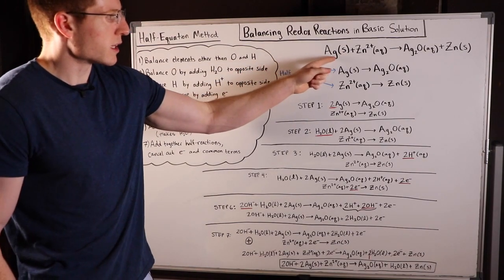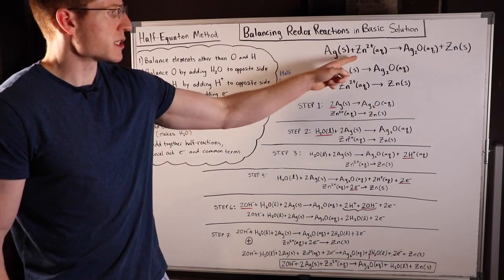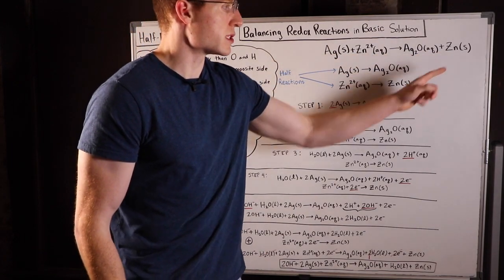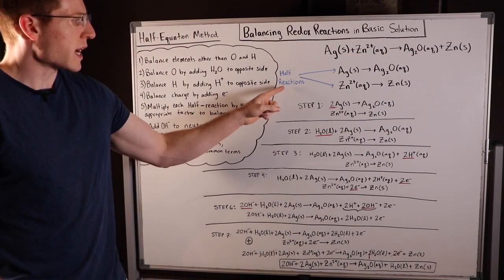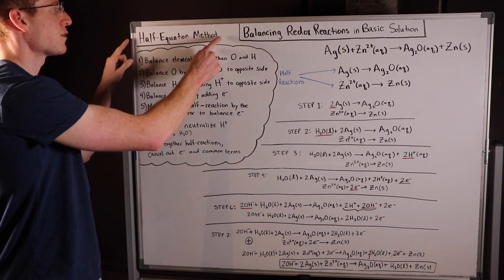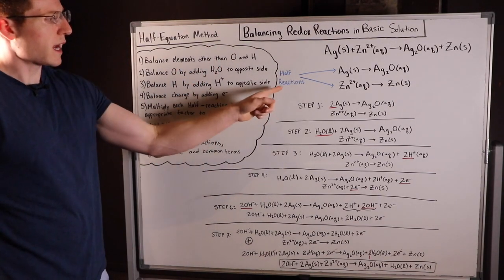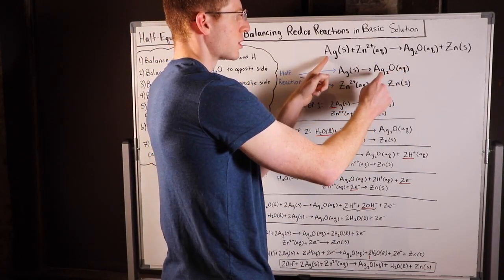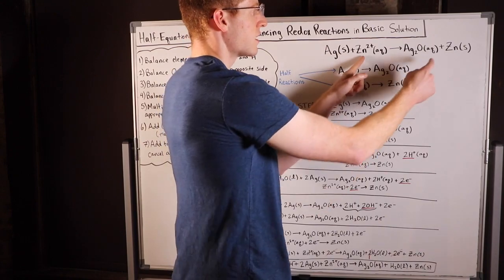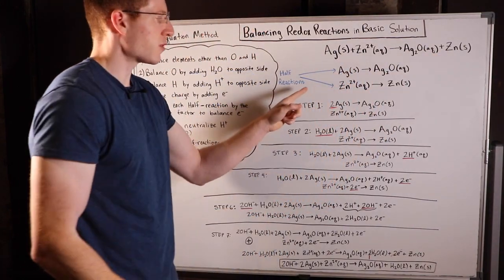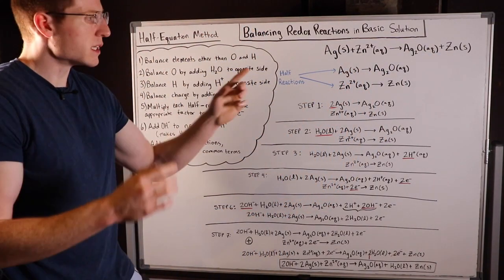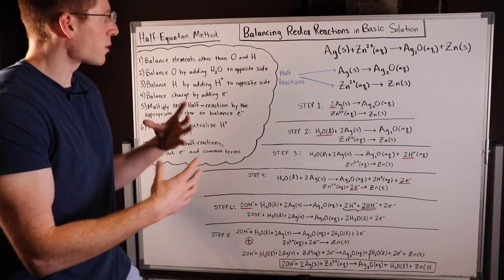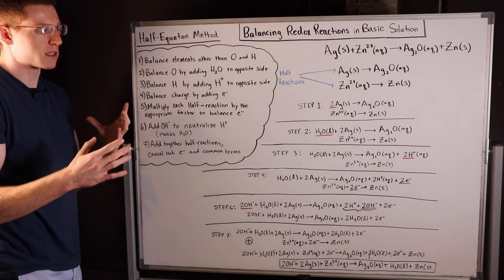I've got an example redox reaction up here: silver plus zinc goes to silver oxide plus zincate, and I split it up into its half reactions so that I can use the half equation method. To find the half reactions I found the reactants and products that share the same element - silver with silver, zinc with zinc. Clearly none of this is balanced, so that's why we're using the half equation method to balance it.